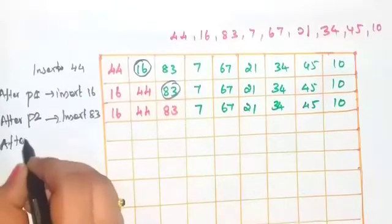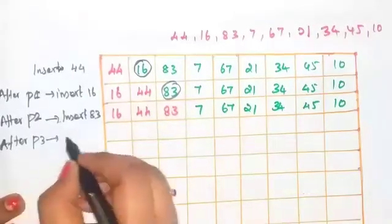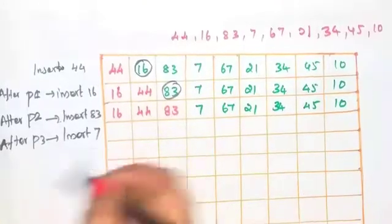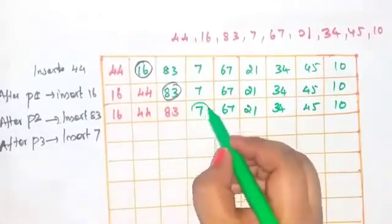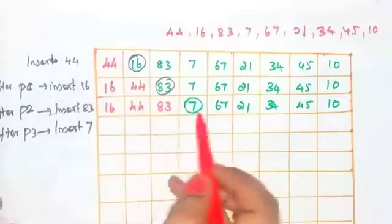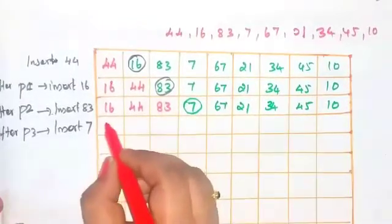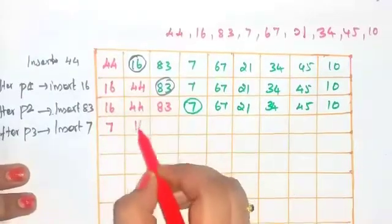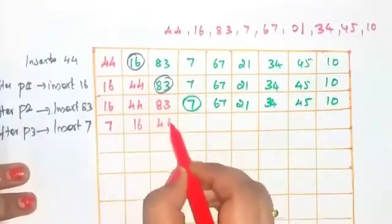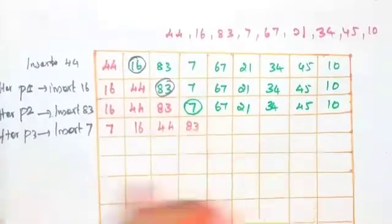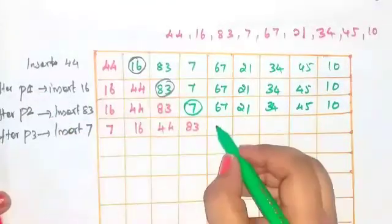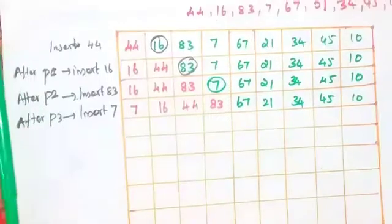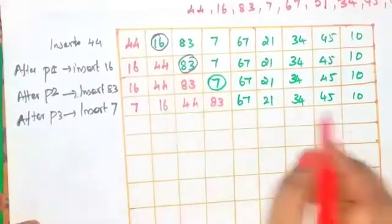After pass three, insert the next element: 7. Compare — 7 is the smallest. So, place 7 here and shift the other elements: 16, 44, 83. Write the remaining elements. This is pass four.